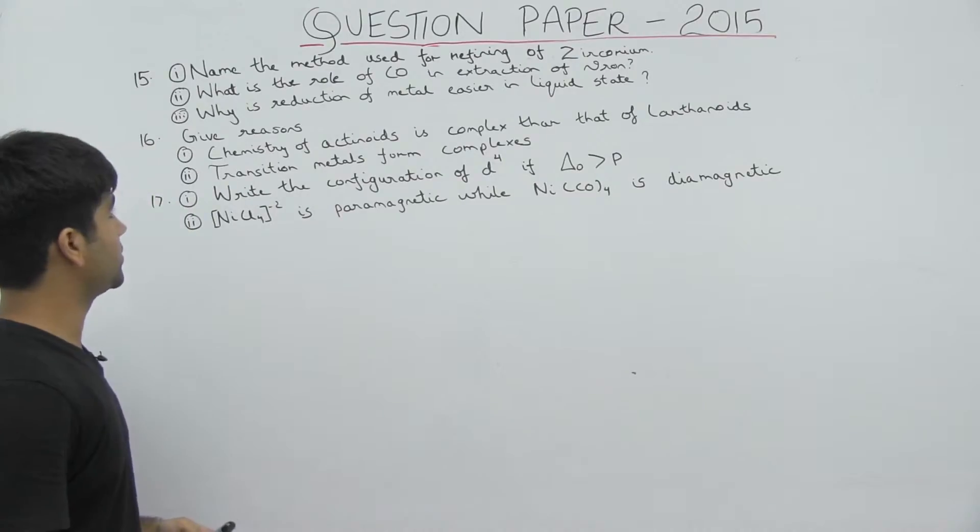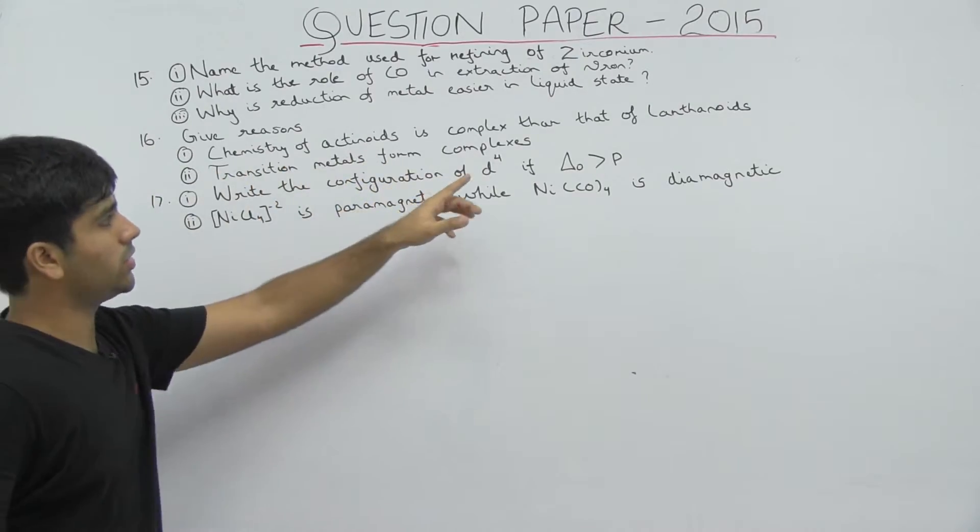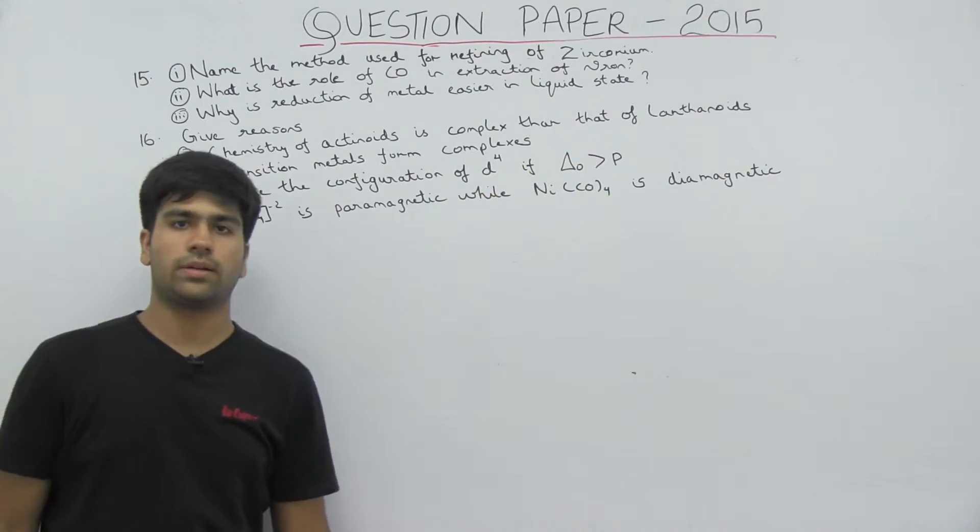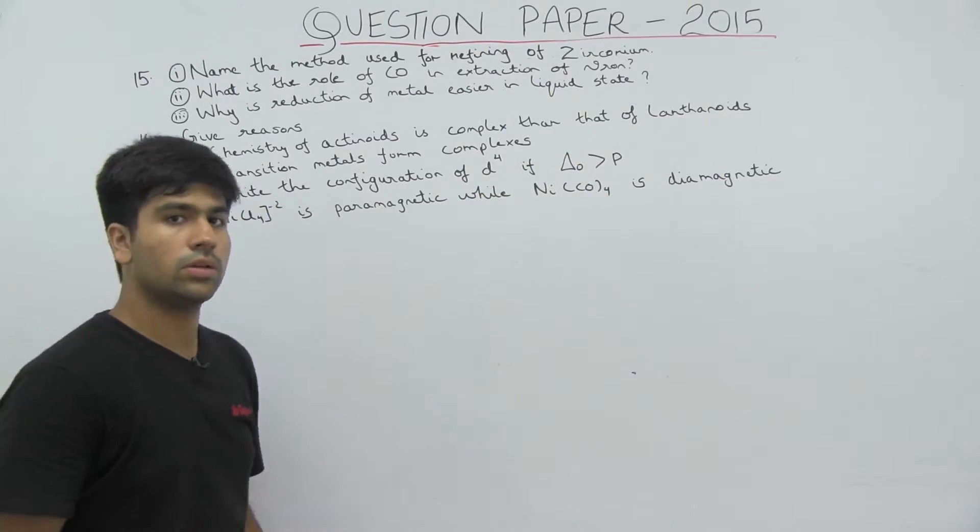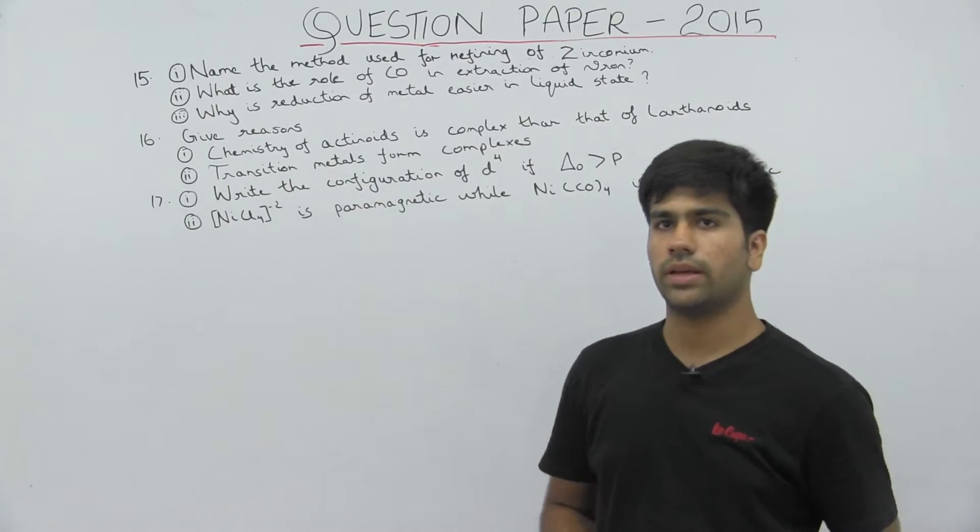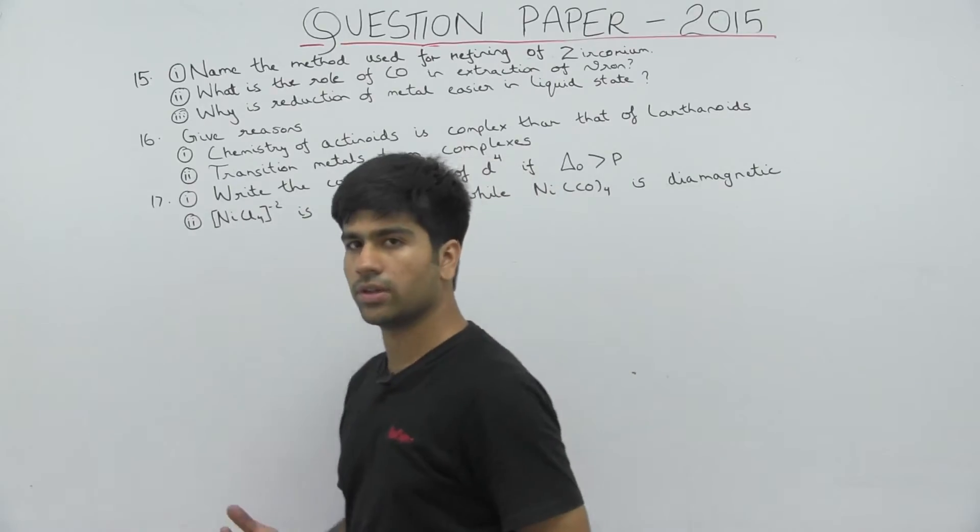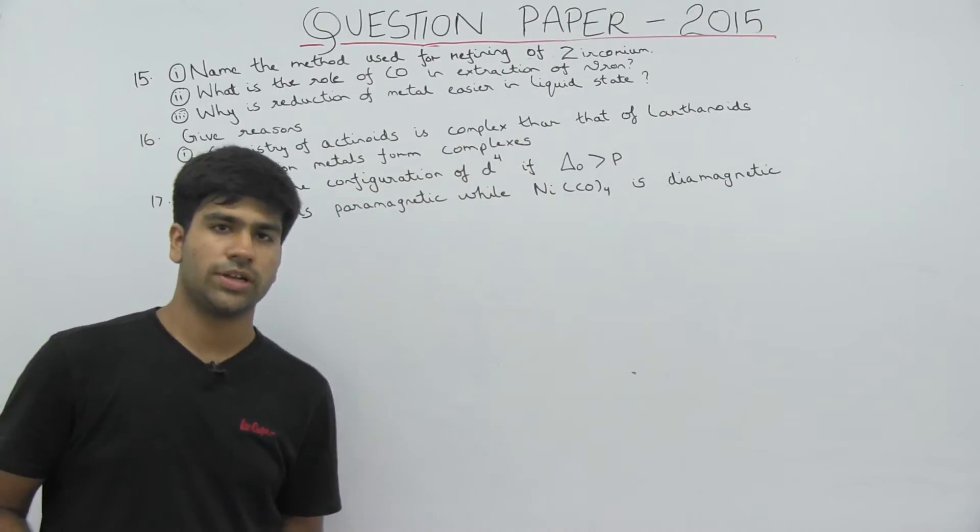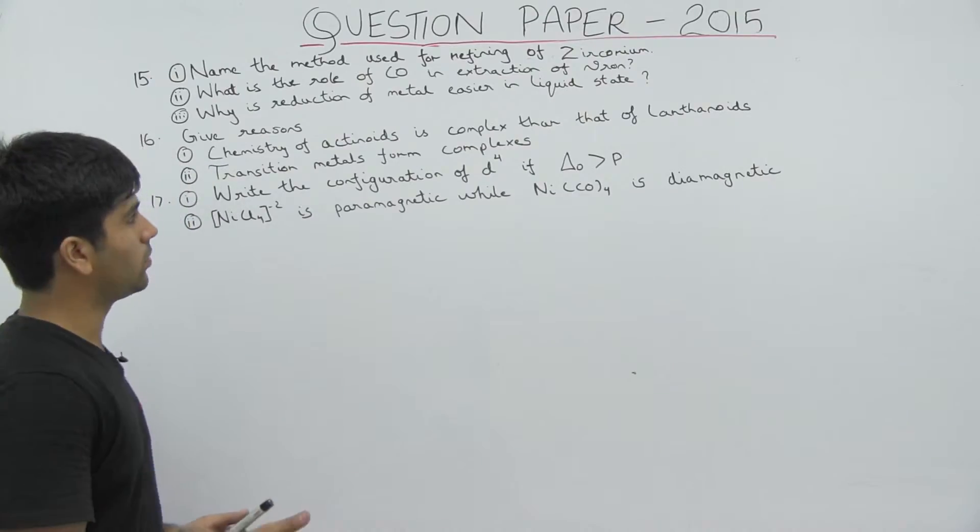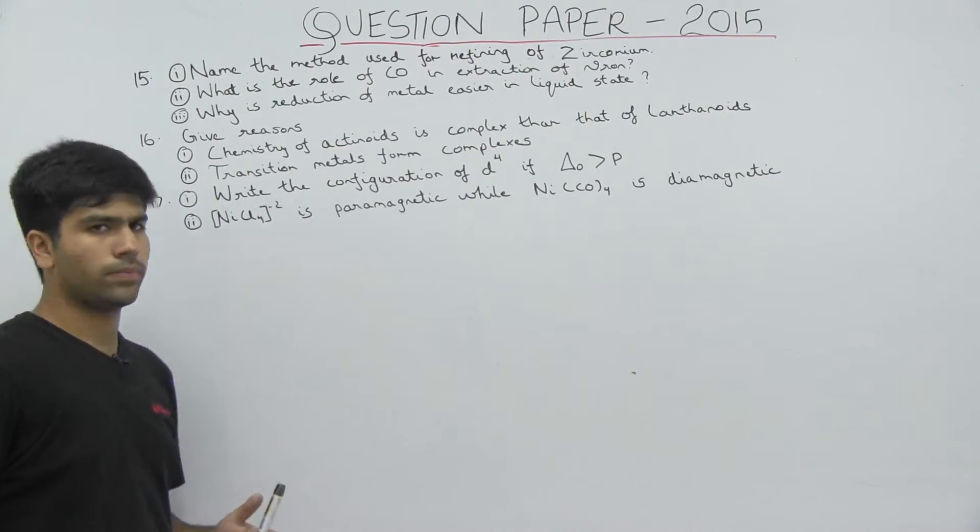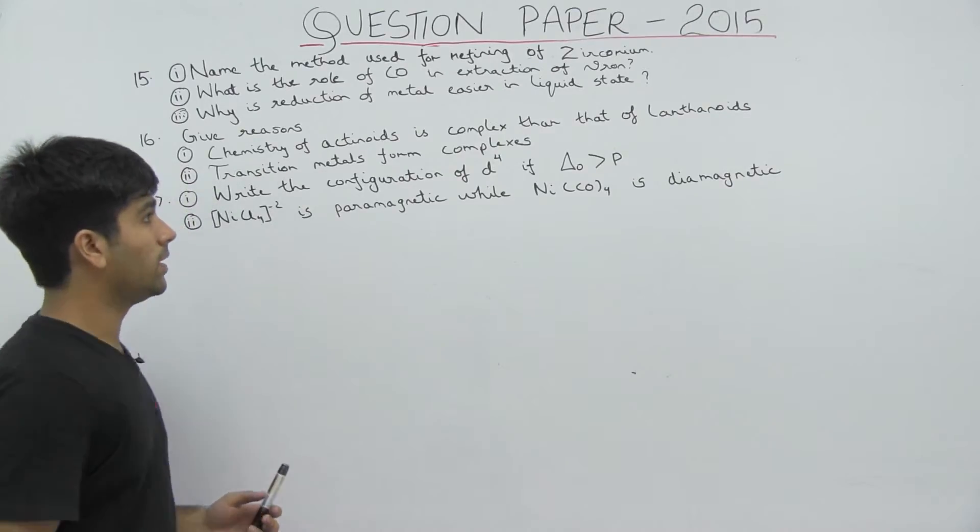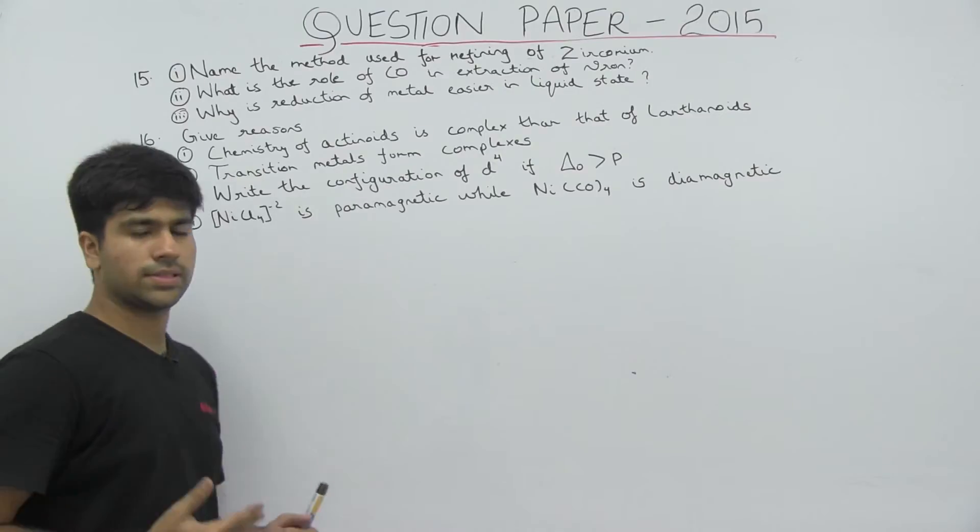Question number 16, give reasons: chemistry of actinoids is more complex than that of lanthanoids. The main reason is because the actinoids are radioactive, and there is no significant difference in their properties because the shielding effect is very similar and their size is also similar. In lanthanoids, they are not radioactive, so it is easy to study comparatively.